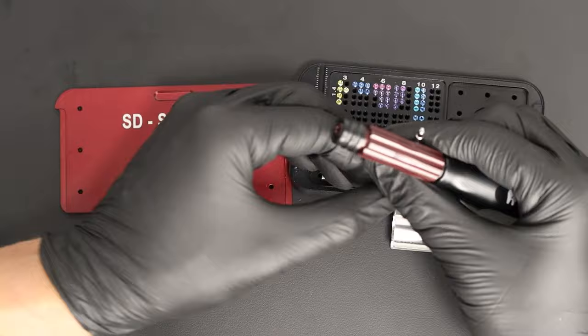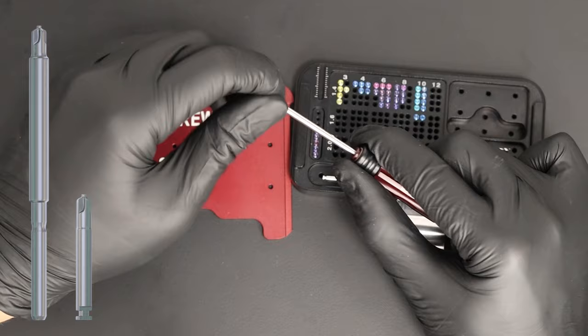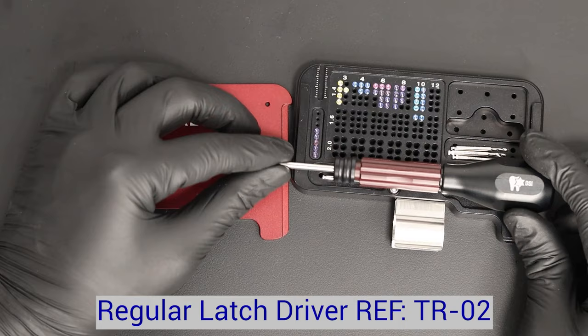The handle consists of two sections that move independently, making single hand operation possible. The driver shaft uses a Phillips press-fit connection that easily and effectively grabs and retains screws. This friction fit of the driver prevents dropped screws.